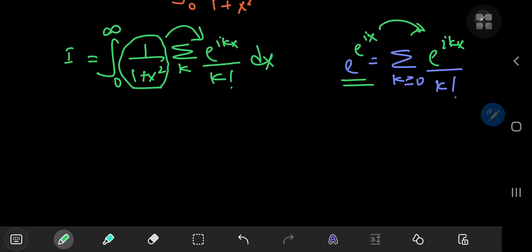And because this term here is independent of k, we can slip it into the sum. So we have the integral from 0 to infinity of the infinite sum over k of e to the ikx divided by k factorial times x squared plus 1, integration with respect to x.